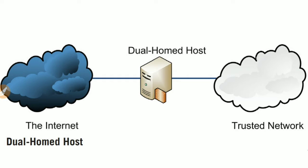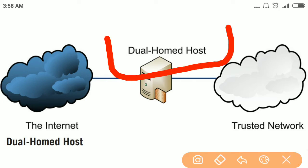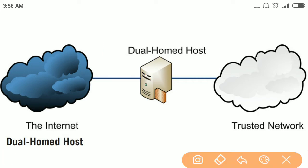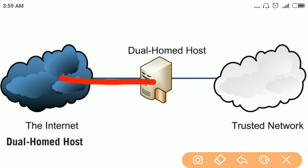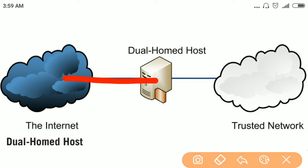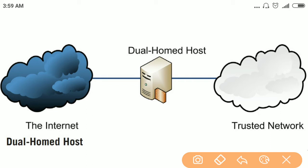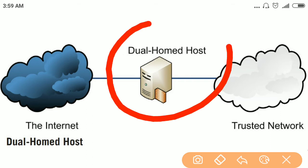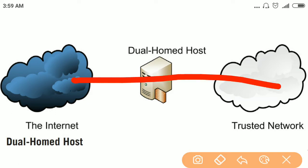Like demilitarized zone or DMZ. Now, coming to flat designs: in the 1990s there was a concept of dual home host. This dual home host has two homes — one is the internet and the other is the internal network. There was no security device or firewall between this dual home host and the internet, and this dual home host does not route traffic. So anyone on the internet who wants to access the internal network had to log into this dual home host and then access the internal network. This was a flat design because there was no defense in depth, and it was a single point of failure.